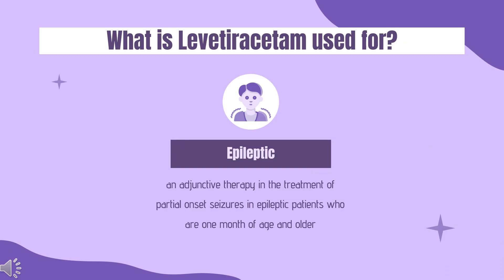Levodiracetam is indicated as an adjunctive therapy in the treatment of partial onset seizures in epileptic patients who are 1 month of age and older. Additionally, it is indicated as an adjunct in the treatment of myoclonic seizures in patients with juvenile myoclonic epilepsy who are 12 years of age and older, and in primary generalized tonic-clonic seizures in patients with idiopathic generalized epilepsy who are 6 years of age and older. Levodiracetam is also available as an orally dissolvable tablet indicated as an adjunct in the treatment of partial onset seizures in patients who are 4 years of age and weigh more than 20 kg.